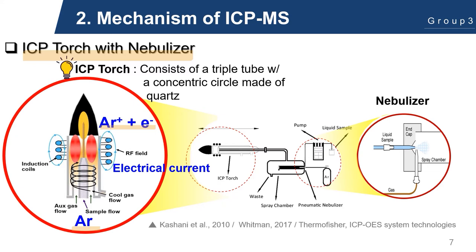So how is plasma formed? The plasma is formed at the end of a set of three concentric quartz tubes, collectively referred to as the torch. Argon gas flows through all three tubes. The inner tube, called the injector, contains the sample aerosol in a stream of argon which delivers the sample to the plasma. Concentric to this is a tangential flow of argon called auxiliary gas, which forms the plasma. The outer tube contains a flow of argon which serves as a cooling layer to prevent the torch from melting.